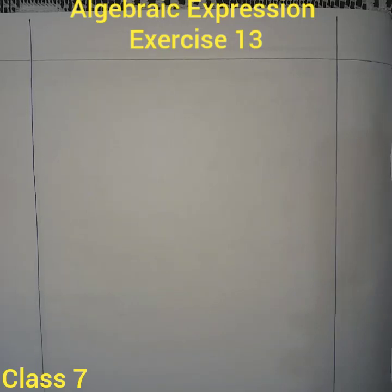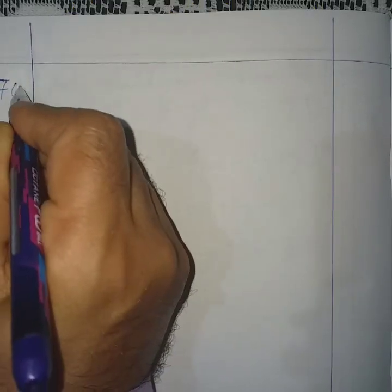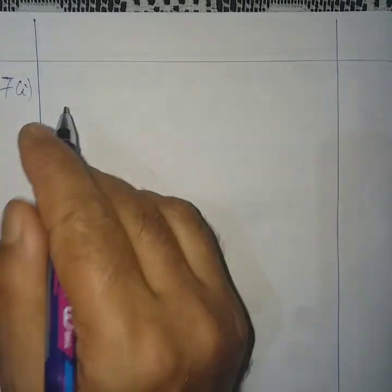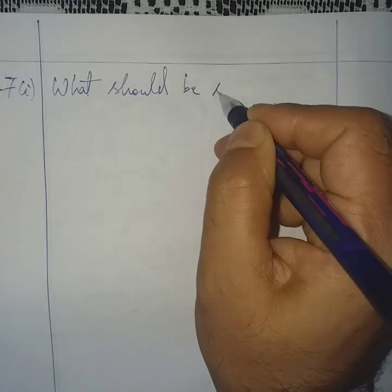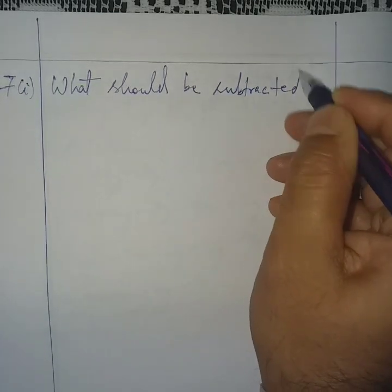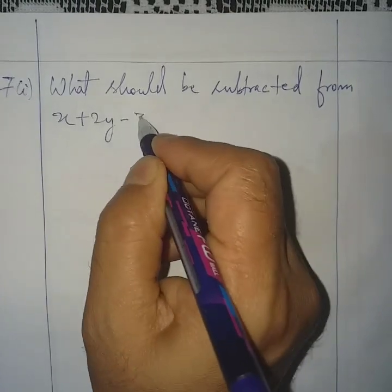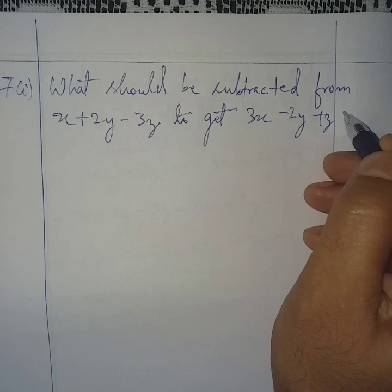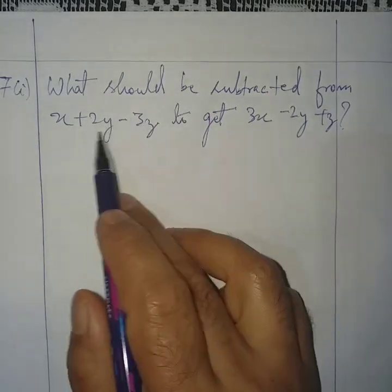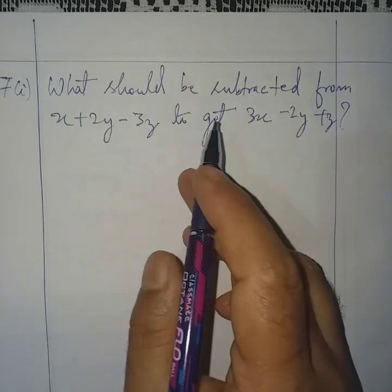Welcome to class 7 mathematics. We are studying algebraic expressions, exercise B, question number 7. Question 1: what should be subtracted from x plus 2y minus 3z to get 3x minus 2y plus z? If we subtract this one from this, that number we will get.